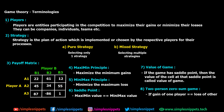Starting with term number one: players. In game theory we have multiple players competing against each other. In this case we're always going to have two players, and these players are entities that participate in the competition to maximize their gains or minimize their losses. They can be companies, individuals, teams, etc., depending on the domain.